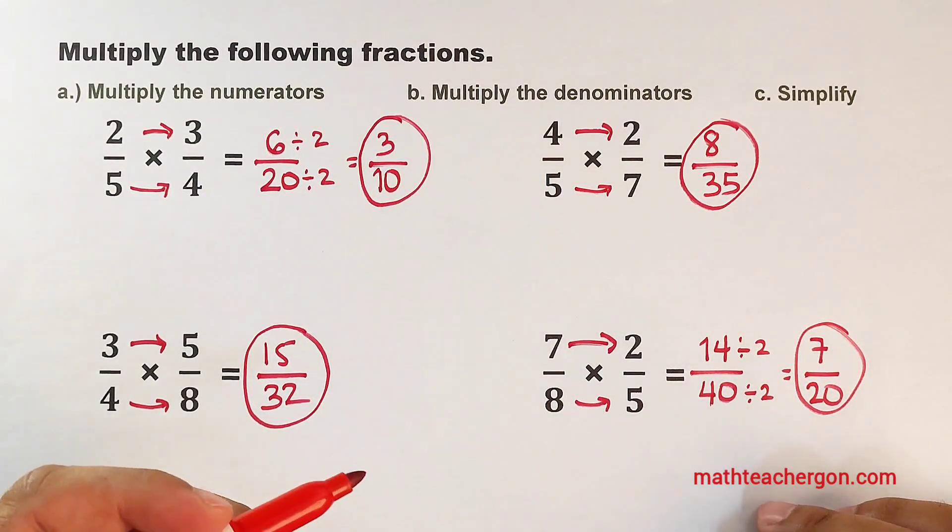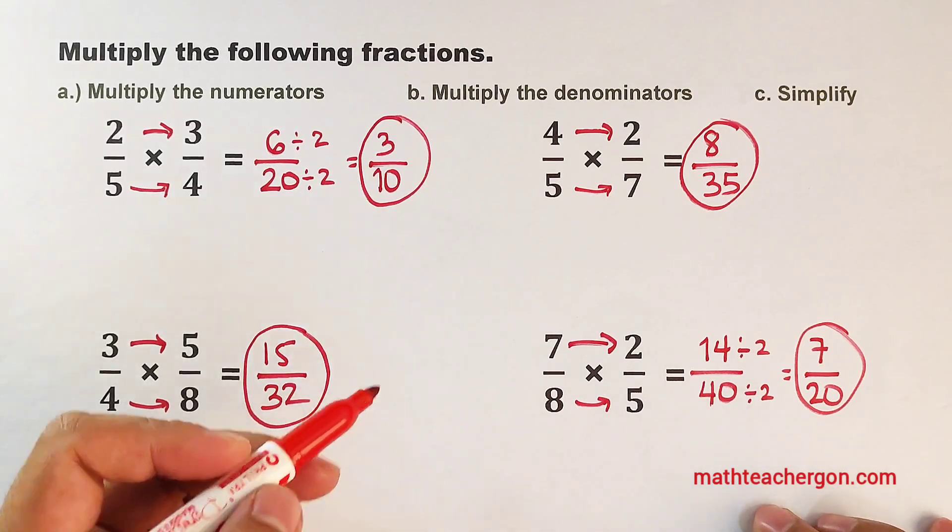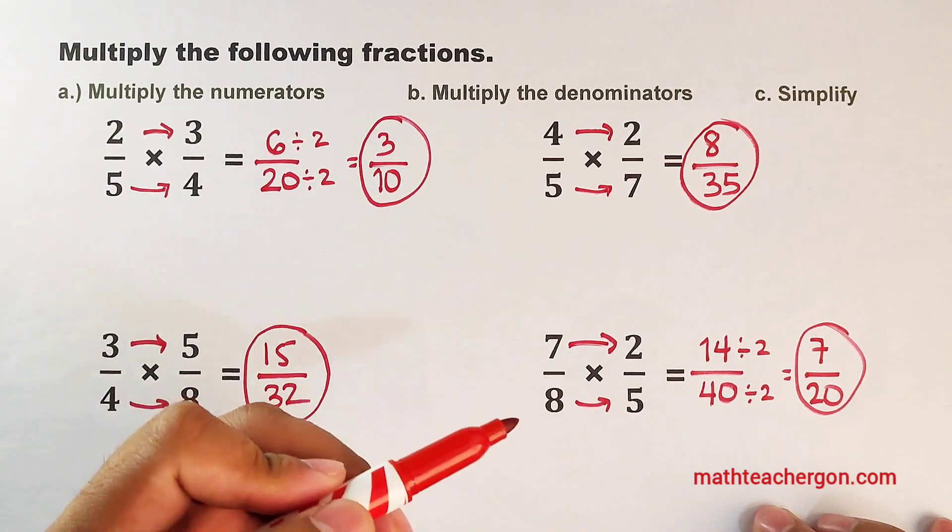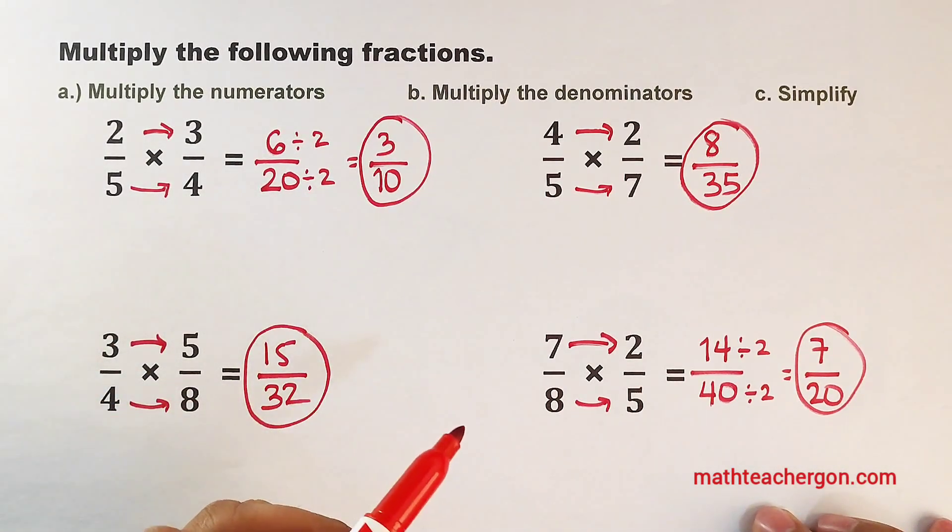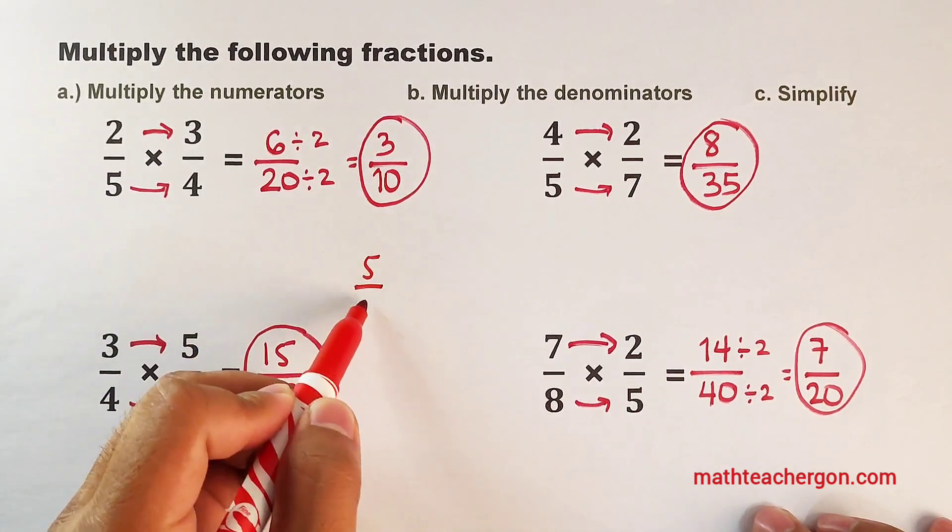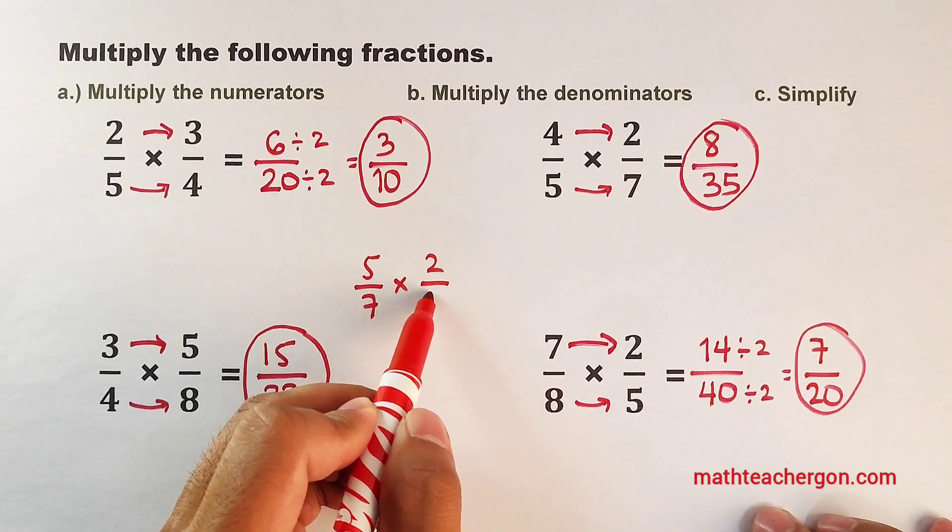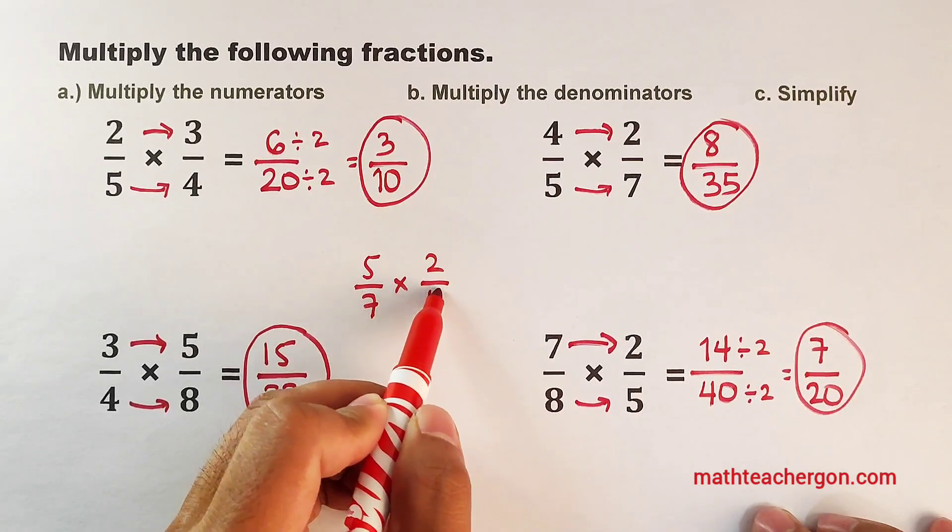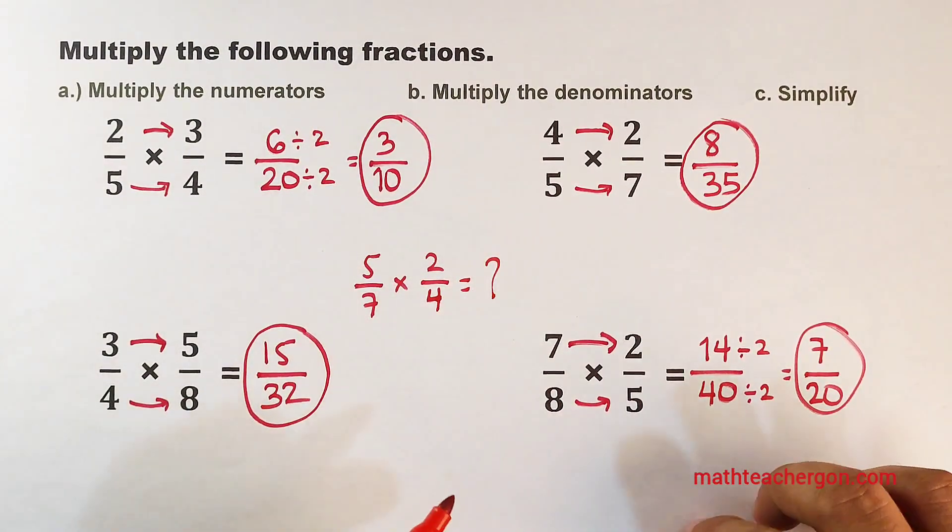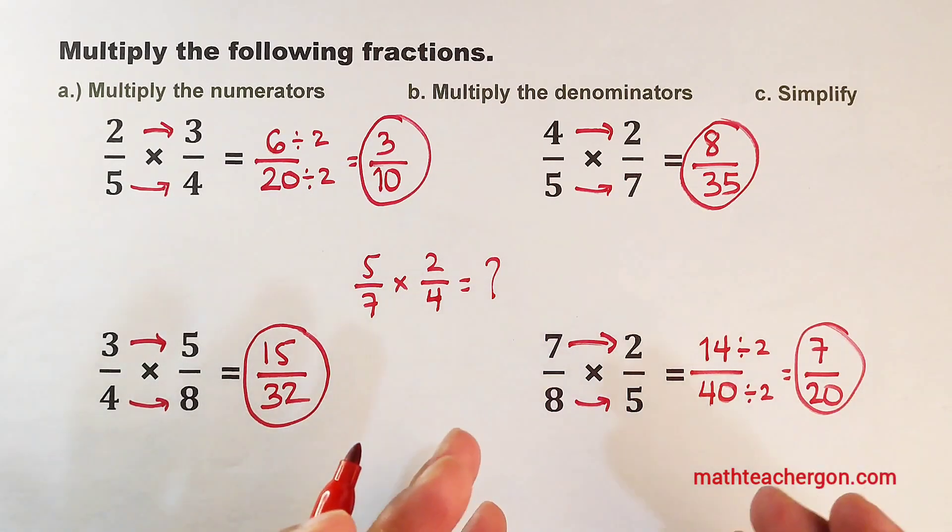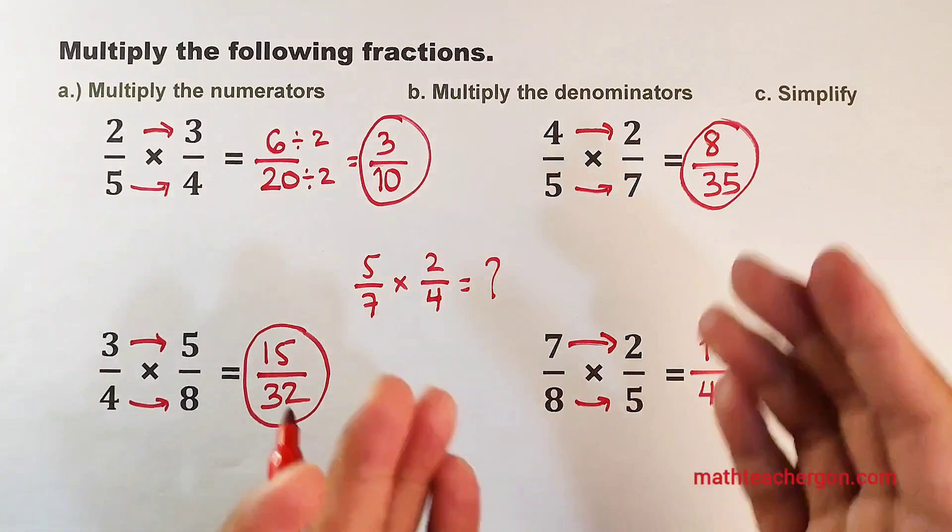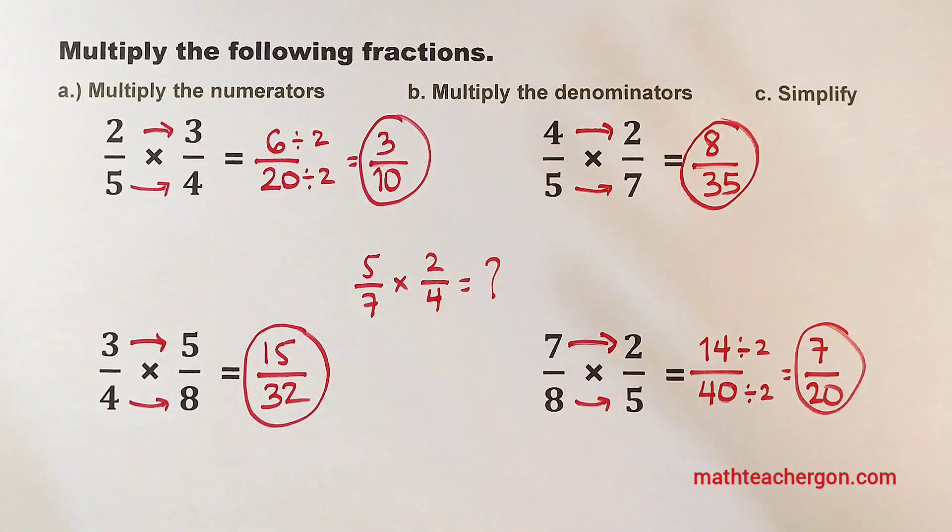That's it, guys. And as part of our routine, I will leave you a problem wherein you will tell me in the comment section what is the answer when you multiply these fractions. We have 5 over 7 times 2 over 4. Let's see in our comment section what is your answer to this problem. So that's it, guys. If you're into my channel, don't forget to like and subscribe and hit the bell button for you to be updated with our latest uploads. Again, it's me, Tichargon. Maraming salamat and bye-bye!